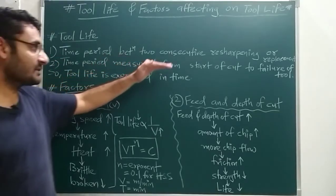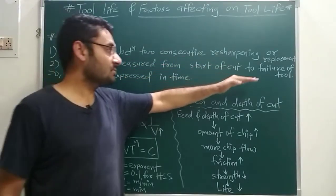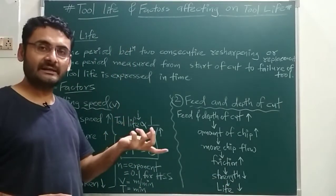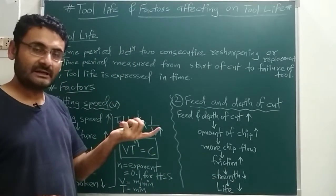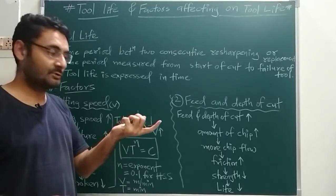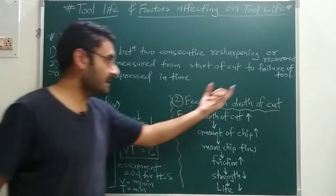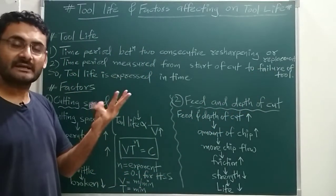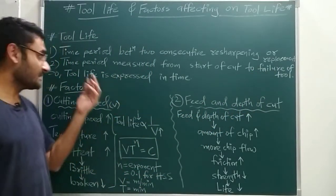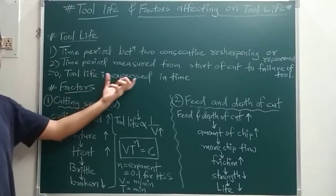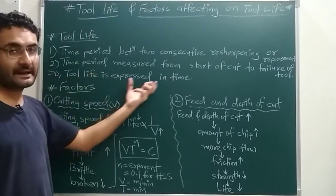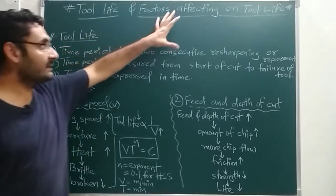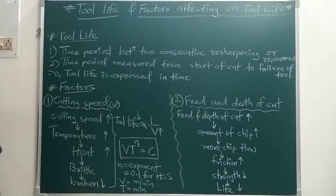The second definition is that tool life is a time period measured from start of the cut to the failure of the tool. Suppose you have started the cutting operation and after three hours your tool has been broken — that means the tool fails. So three hours is your tool life. Tool life is measured and expressed in terms of time.